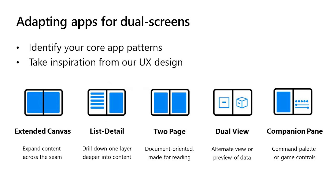The first is extended canvas, which means a single layout taking up the entire area, such as a map, a drawing surface or a spreadsheet. List detail is the common hierarchical navigation pattern used in everything from to-do apps to email readers. Two page is an embodiment of the book metaphor used for reading apps or any other views where you want to paginate horizontally. Dual view is about using the two screens for different views of the same data, like a map and a list or an editor and a preview. And lastly, companion pane means using the second screen for a command palette or for game controls.